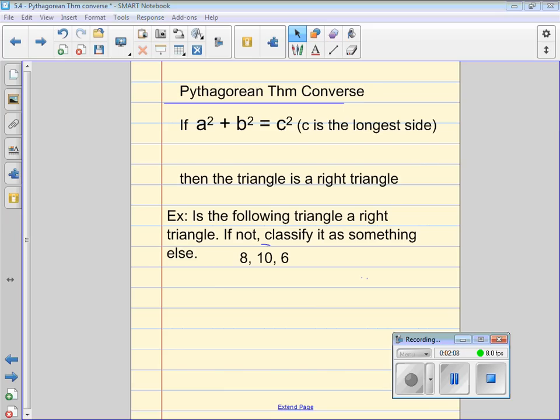Looking at the Pythagorean Theorem Converse, it basically says that if I find out that A² + B² = C², I take the three sides of a triangle that are given, I plug it in there, and it actually works. The left side equals the right side. Then we conclude that it's a right triangle.